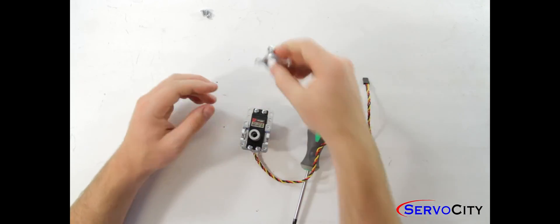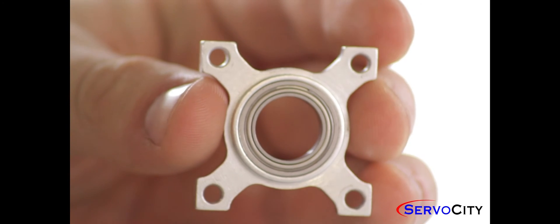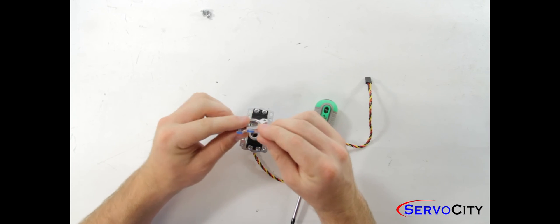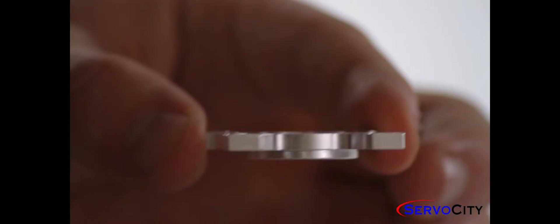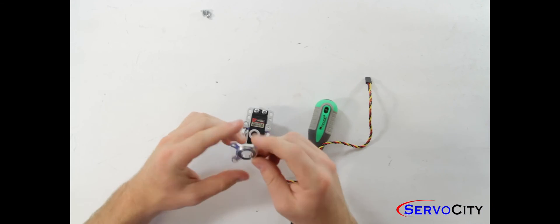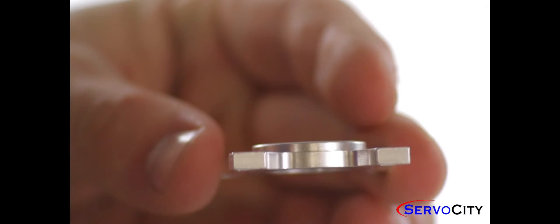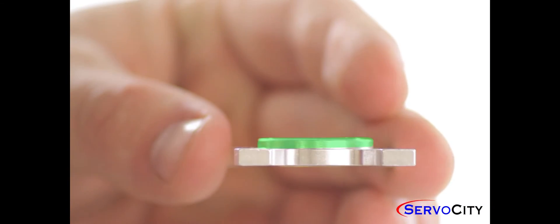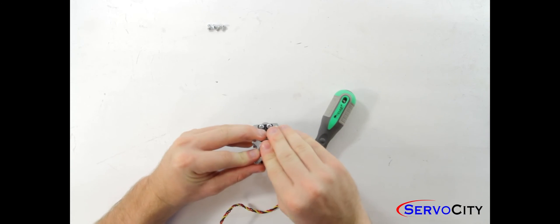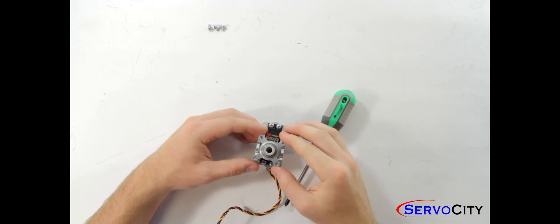Finally, grab the one half inch bore flat bearing mount. You will notice as with the quad hub mounts that this also has two ways in which it can be oriented. The first of which being with the rim facing down towards the servo and the second with the rim facing up away from the servo. You will want to press this over the servo shaft with the rim facing up.